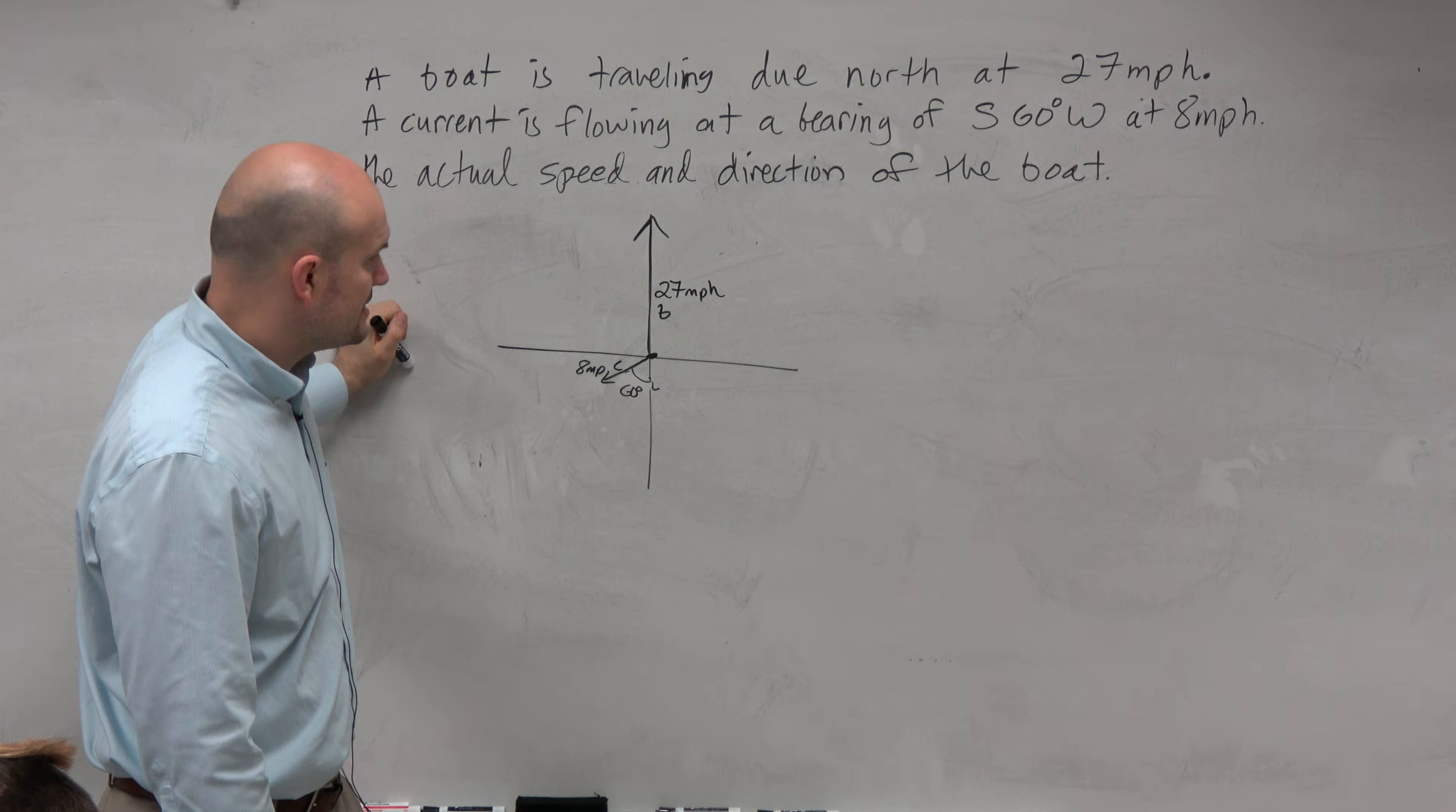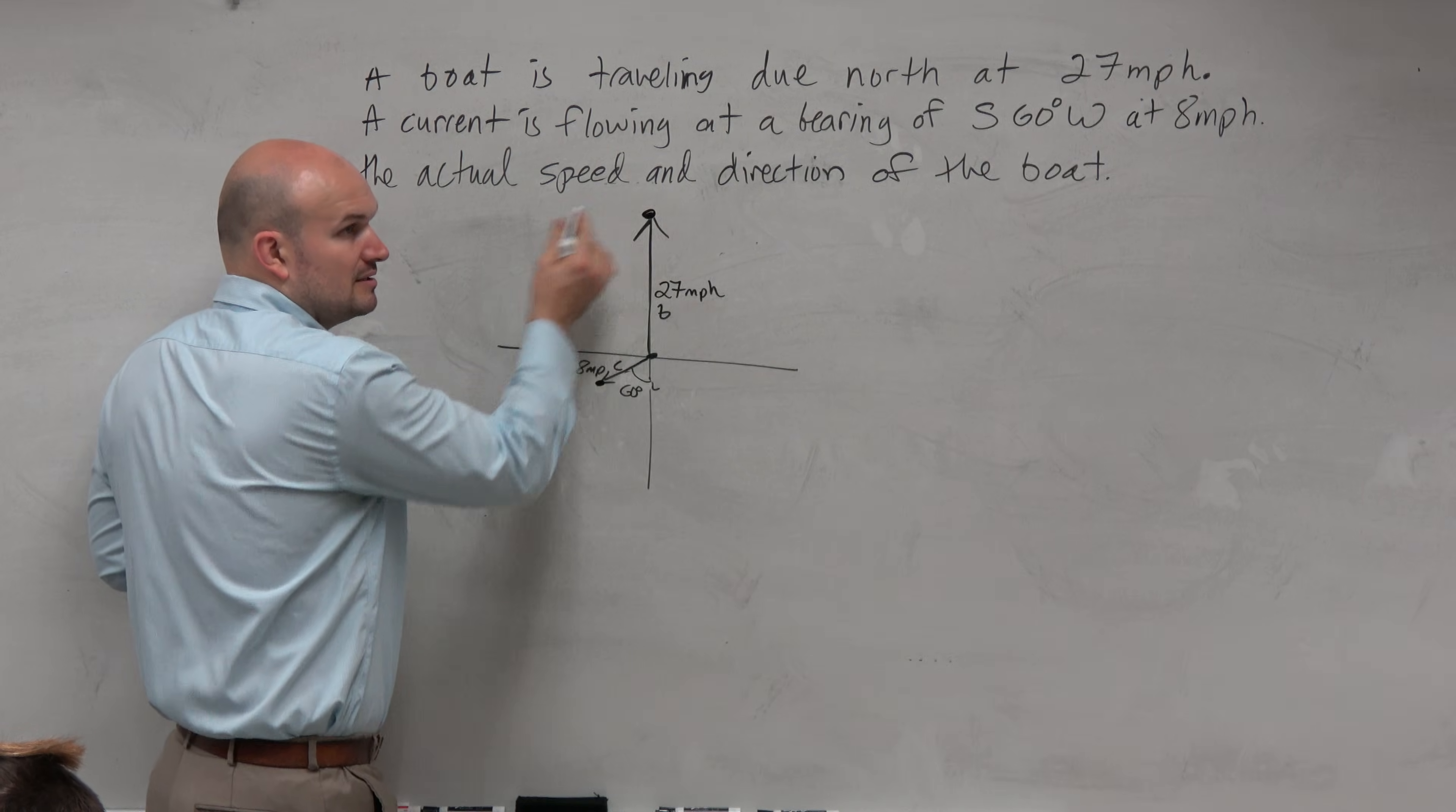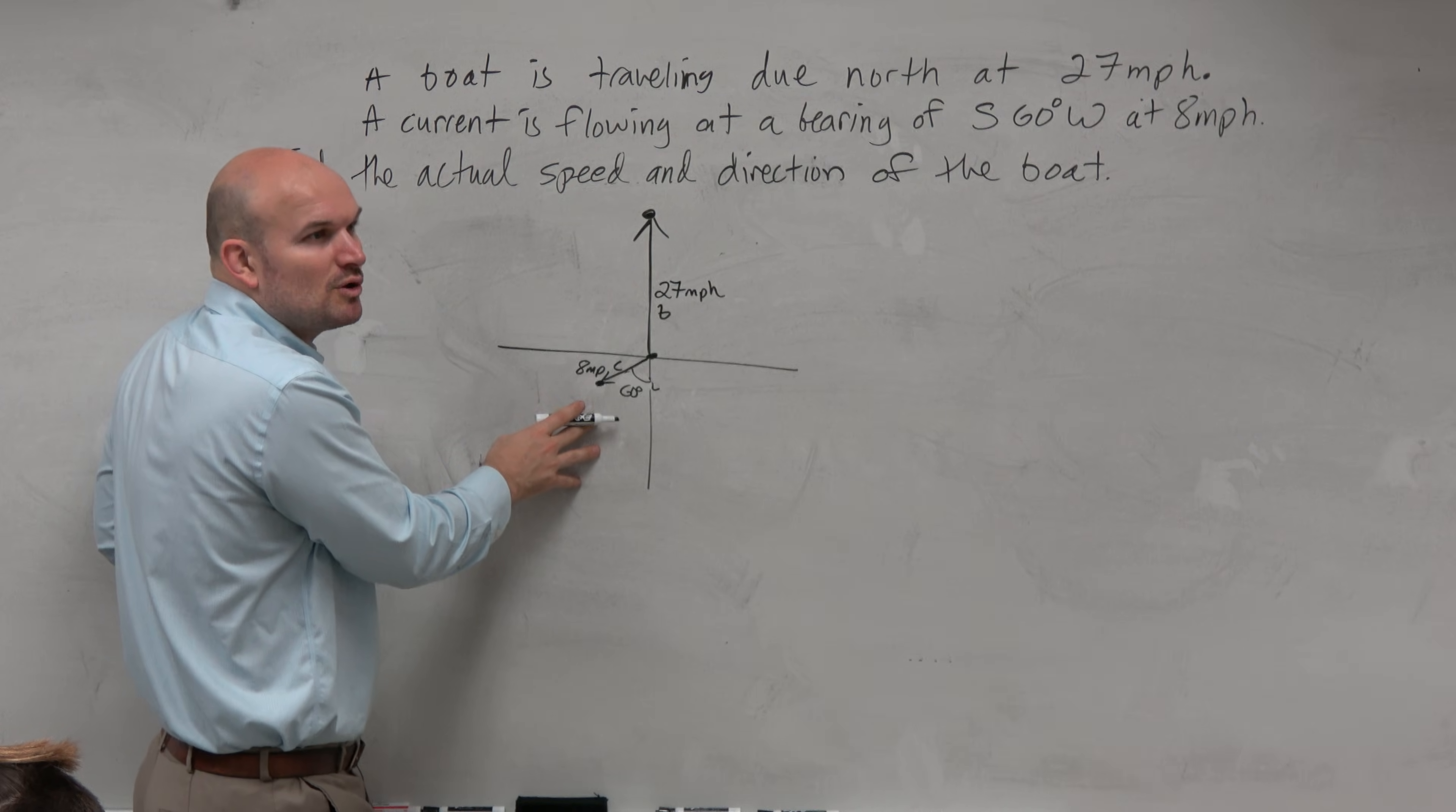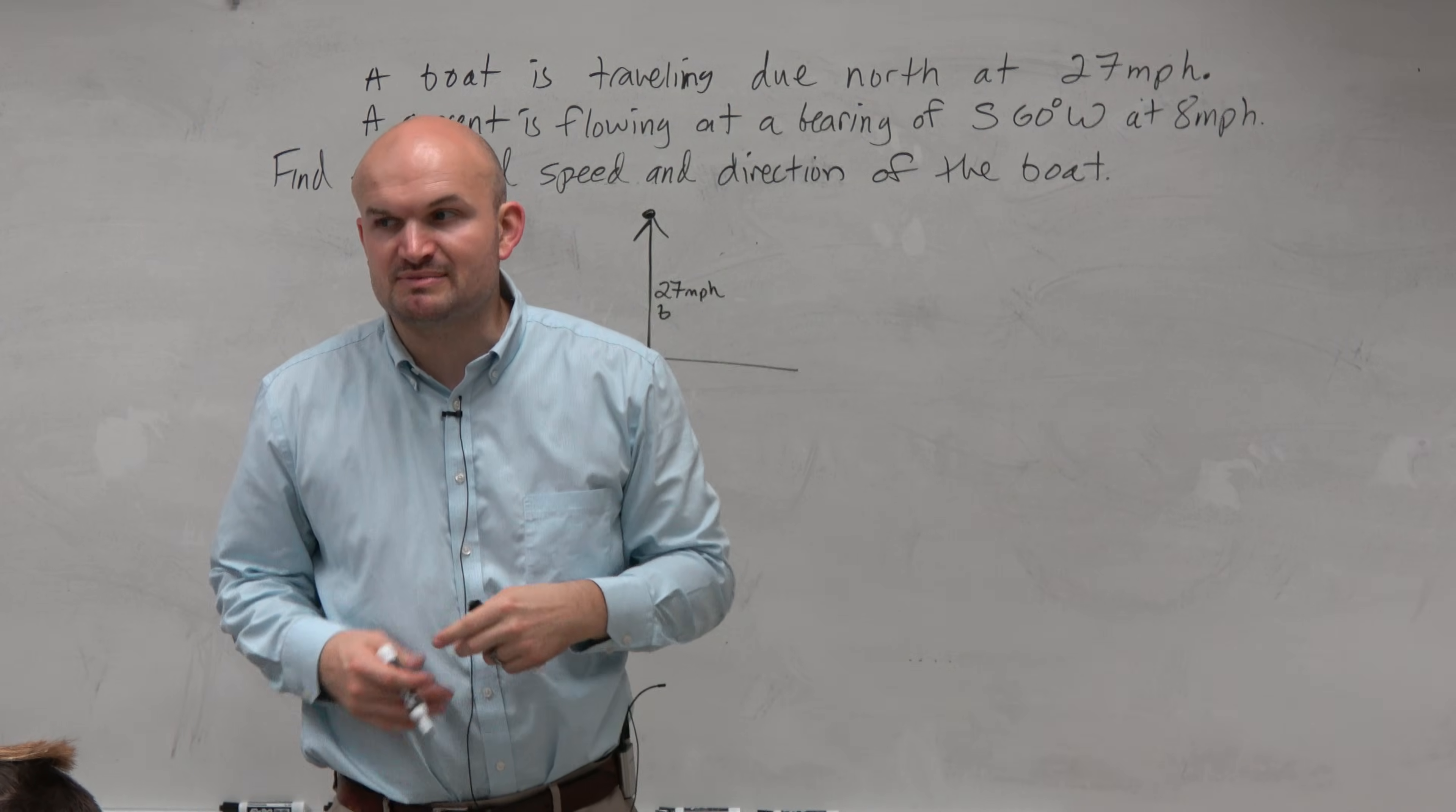So the problem is, using component form, we don't know the x and y coordinates of our terminal points. We could say the terminal point for there, we could probably figure out, right? 0, 27. But for this one, we don't really know. Now, could we figure it out? Could we use trig to figure out the x and y coordinates? Yes, we could, but that's more math, which you're doing, which I'm telling you, that's more math to do. So what we could do is, couldn't we just write each vector in terms of its magnitude and direction?